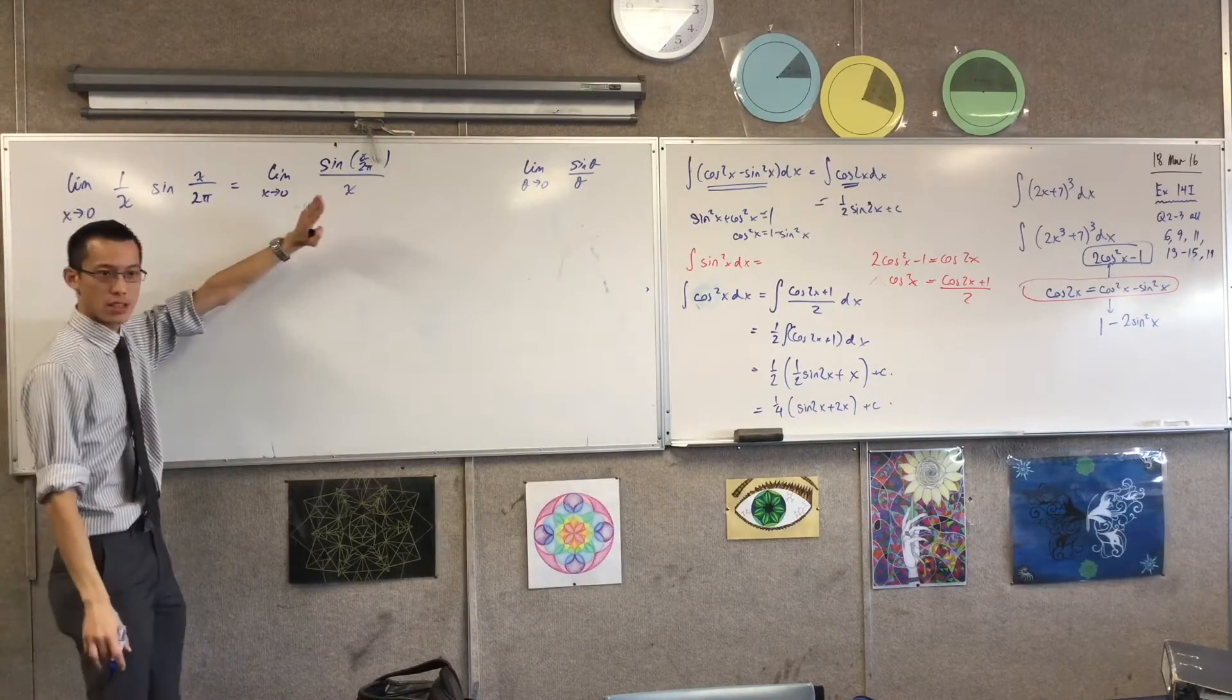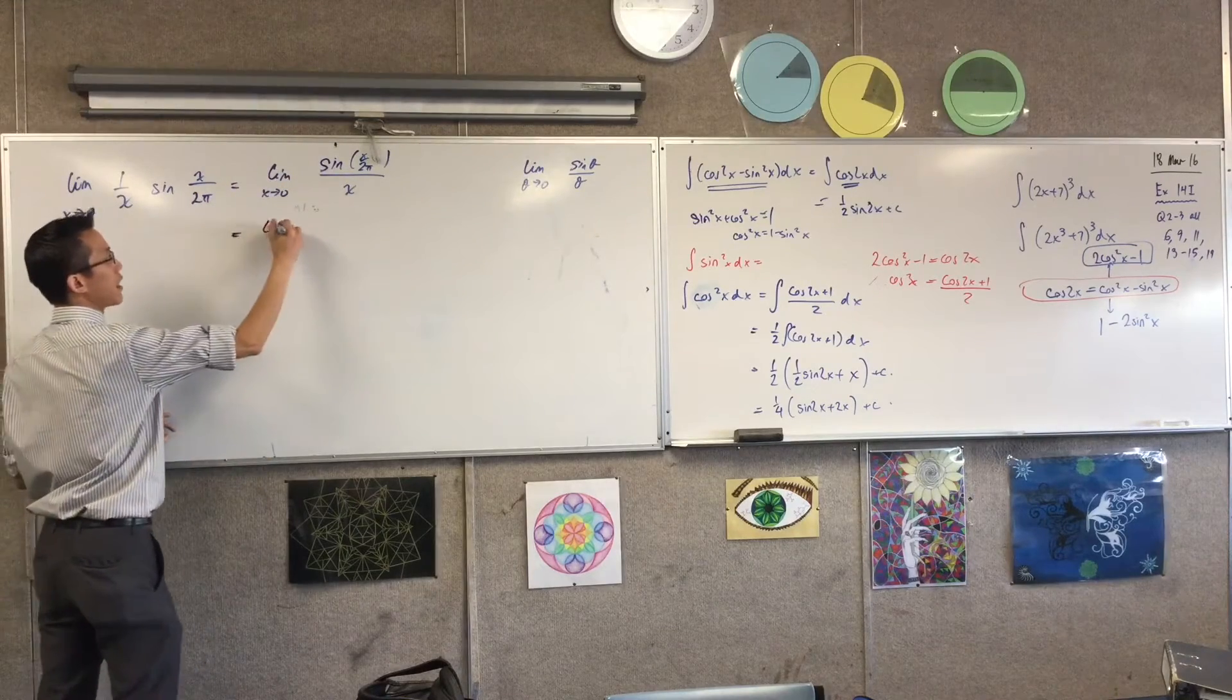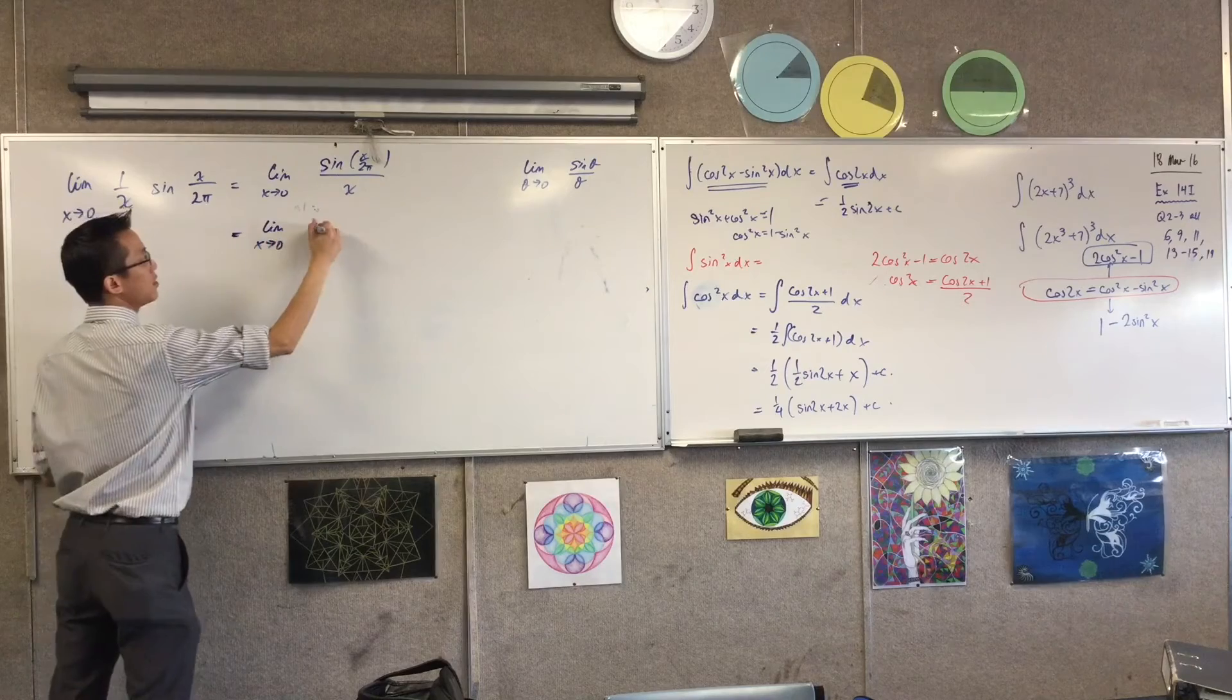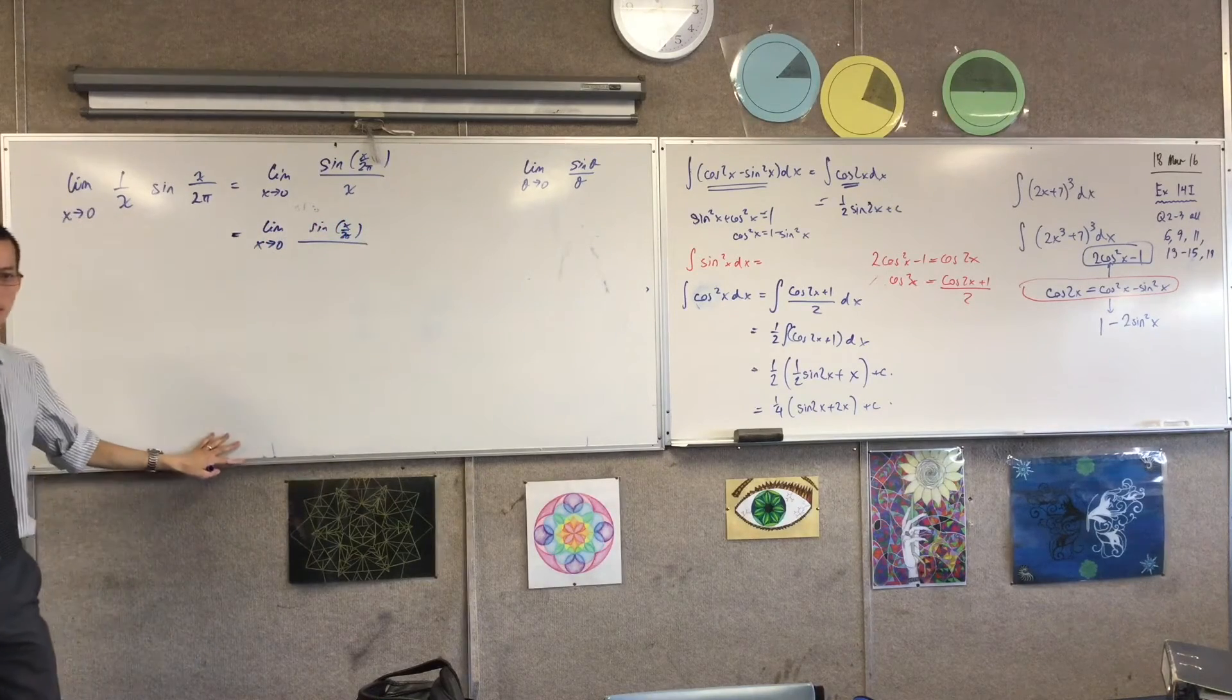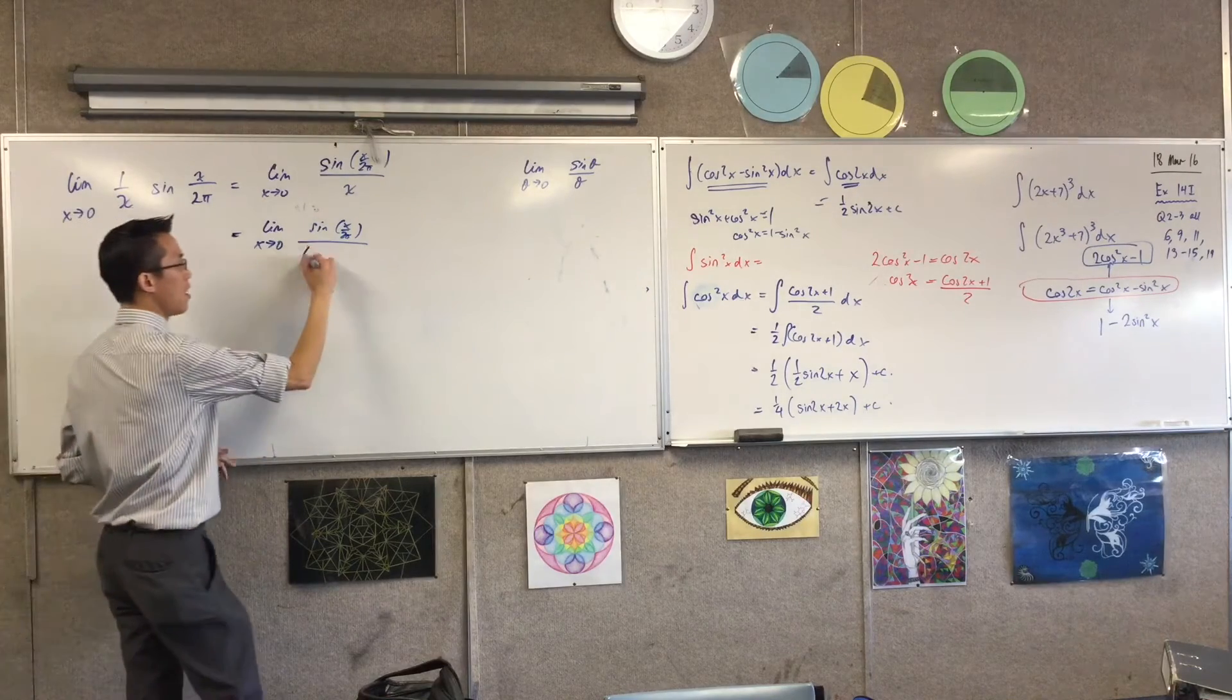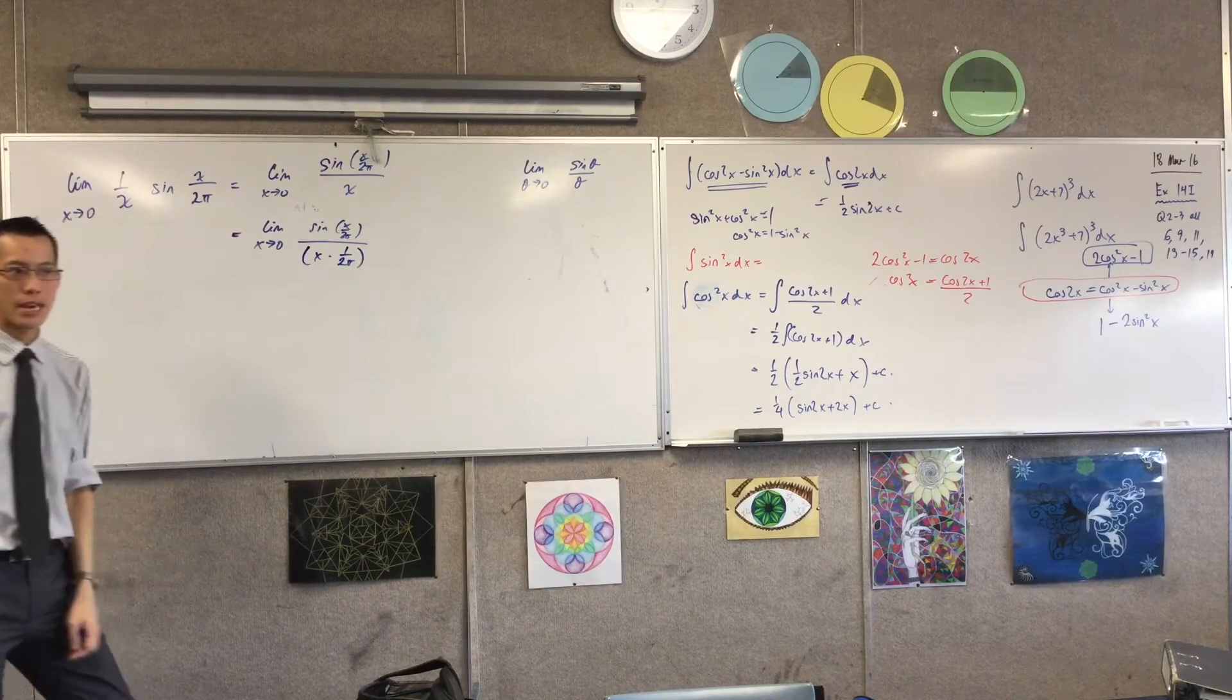I need to change the denominator to reflect that. So if I'm going to change this denominator so it's not x, but it's x over 2 pi, what I need to multiply by is 1 over 2 pi. Do you agree with that? 1 over 2 pi on the denominator.